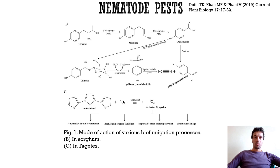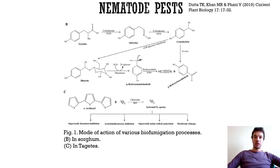Tagetes marigold can be more efficient than synthetic biofumigants and control nematodes to greater depth, but does not produce significant biomass for efficient nematode control. It has a short vegetative phase, self-seeds, and may become a weed. Its active compound, alpha-terthienyl, is produced upon nematode attack under the action of either light or peroxidases. Therefore, this plant is more efficient as a cover crop or intercrop rather than as a soil amendment, and its root exudates can easily reach the rhizosphere of crop plants grown in close proximity. It is recommended to grow marigolds for at least 2 months prior to planting susceptible crops.